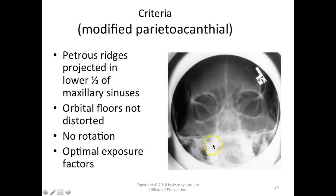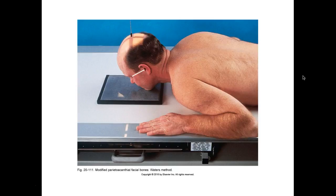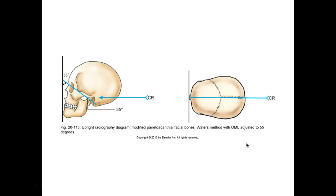We don't want any tilt or rotation on the modified Waters. There may be some rotation visible when the mid-sagittal plane isn't straight side to side, or if one side is burned out — using a cone can contribute to this. The OML is at 55 degrees, exiting the acanthion, with the lips-meatal line perpendicular.